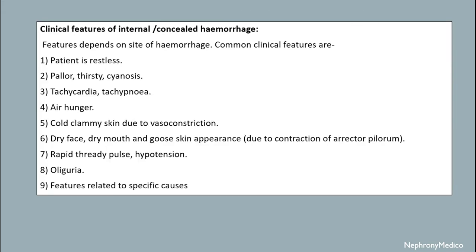The clinical features depend on the site of the hemorrhage, but common features include: the patient is restless, pallor, thirsty, cyanosis, tachycardia, tachypnea, air hunger, cold clammy skin due to vasoconstriction, dry face, dry mouth, and goose-skin appearance.